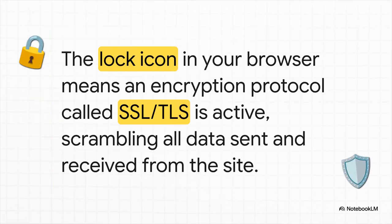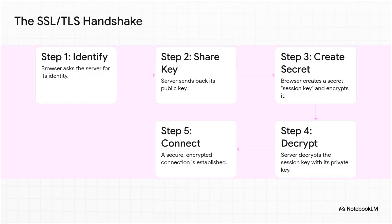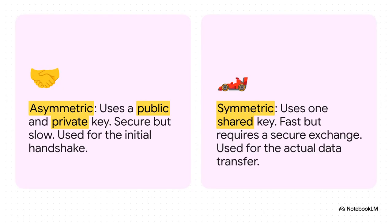We actually see this in action all the time, right in front of our eyes. You know that little padlock icon you see next to the website address? That's not just for show. That's your signal that a super powerful security protocol called SSL, or its modern cousin TLS, is on duty, actively scrambling everything you send and receive. So how does this all kick off? Before a single piece of your data gets sent, your browser and the website server do this thing called a secret handshake — a super fast five-step dance where they prove to each other who they are, and most importantly, they secretly agree on a one-time use code, a session key that they'll use just for this conversation and this one only.